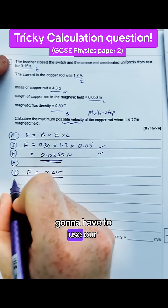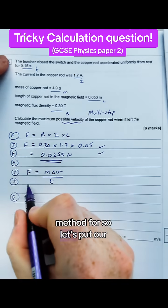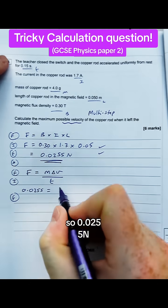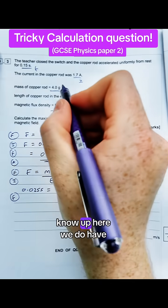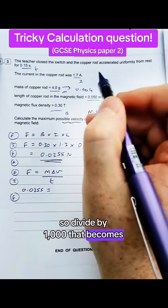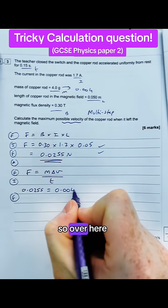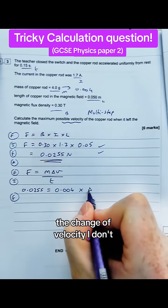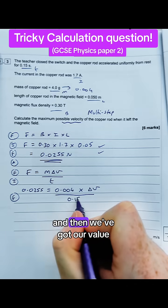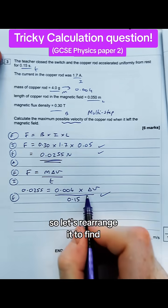So this one we are definitely going to have to use our method for. So let's put our numbers in. We've just worked out the force so 0.0255. The mass of the rod we know up here, we do have to convert that to kilograms so divide by a thousand, that becomes 0.004, and the change of velocity I don't know, so I'm going to leave that as it is, we'll write an X.